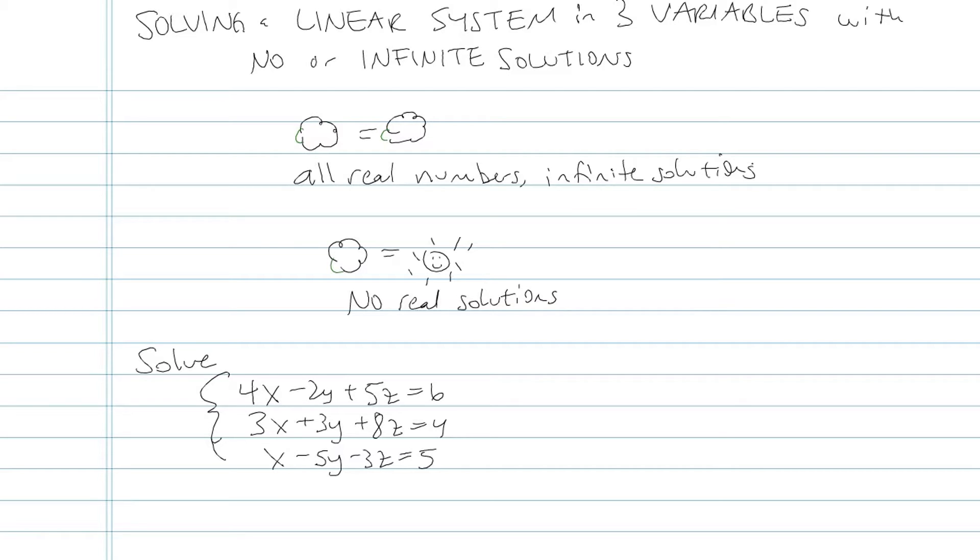Now, contrast that if I get something like 10 equals 0. I drew cloud equals sunshine. Things that are never true. There's no variables, but just integers, like 10 equals 5. Could be a fraction. 10 equals a half. Never, ever true. That means no solutions. There's no x, y, z numbers I could put in there that would make 10 equal to a half.